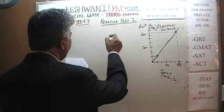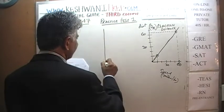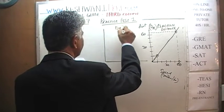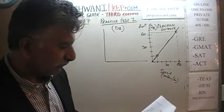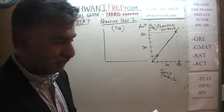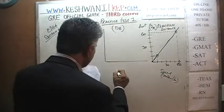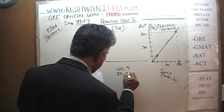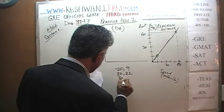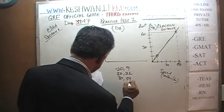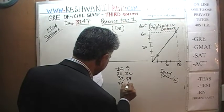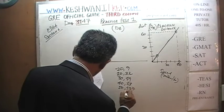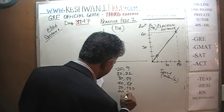The next graph measures the braking distance — the distance required once the brakes have been applied. This graph is easier because they give us the exact coordinates: at 10 mph it is 9 feet; at 20 mph, 22 feet; at 30 mph, 49 feet; at 40 mph, 88 feet; at 50 mph, 137 feet; and at 60 mph, 198 feet.